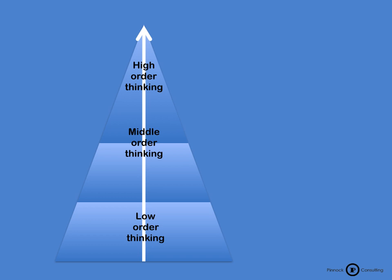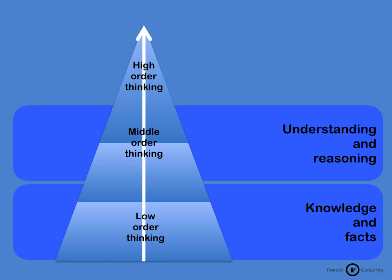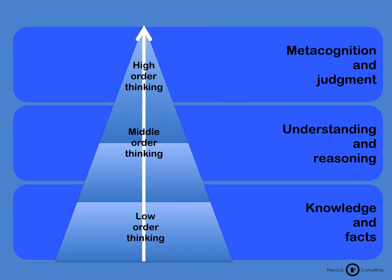Your lowest order of thinking is really just gaining knowledge and facts. Once we have the knowledge, we're able to use it and show understanding — that's your middle order thinking, where learners are able to reason using the knowledge they have. Then your highest order thinking is making judgment calls, being able to reflect on your own thoughts, and being able to express them.